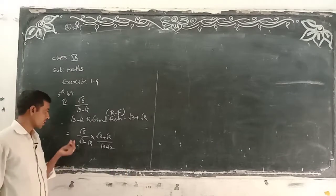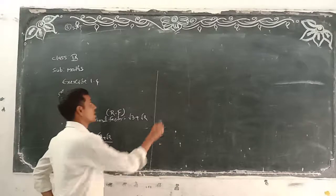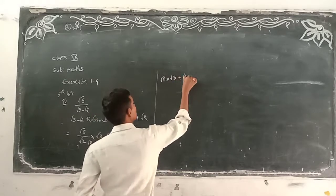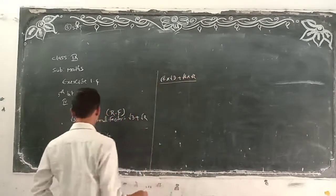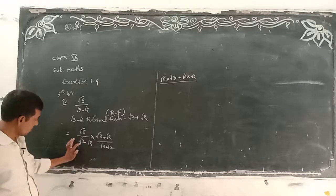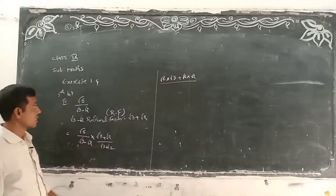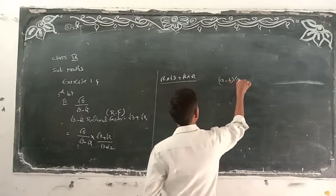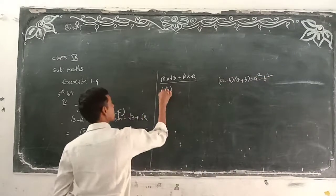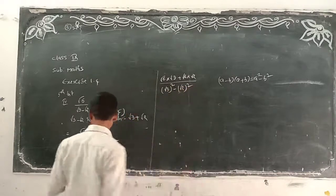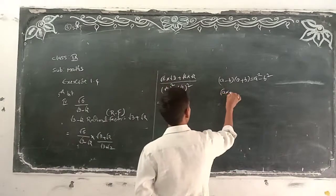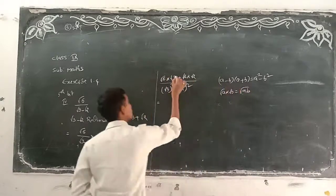Now, how do we multiply? This root 6, you multiply with both terms: root 6 into root 3, plus root 6 into root 2. In the denominator, we have the same numbers with minus sign — apply the formula: (A minus B)(A plus B) = A squared minus B squared. Here A = root 3, B = root 2. Root A into root B equals root AB.